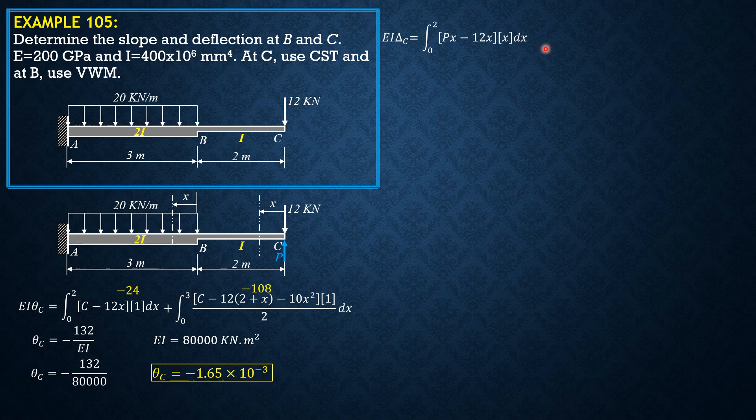Then derivative is x dx with respect to P. Then plus integral of P times 2 plus x minus 12 times 2 plus x, or P minus 12 times 2 plus x and minus 10x squared. Then the derivative of P. The derivative of P times 2 plus x is 2 plus x. That's why we have 2 plus x here. And the entire integral divided by 2.